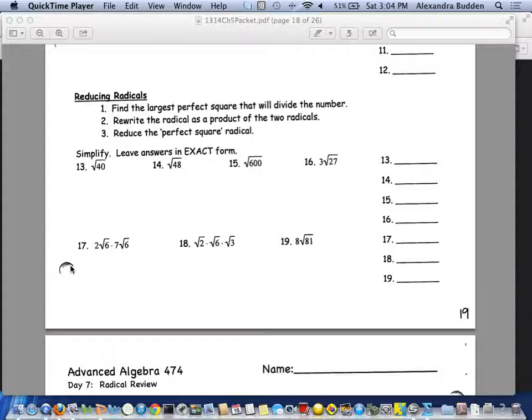Step 1 says find the largest perfect square that will divide the number. So in example 13, the largest perfect square that goes into 40 is 4. Rewrite the radical so 40 becomes 4 multiplied by 10, both under the square root. Then it says reduce the perfect square. Square root of 4 is 2, and then root 10. Root 10 has no perfect square that divides evenly into it, so I am finished. My answer is 2 root 10.